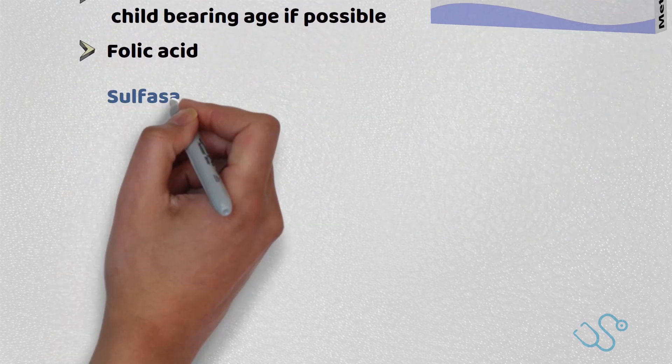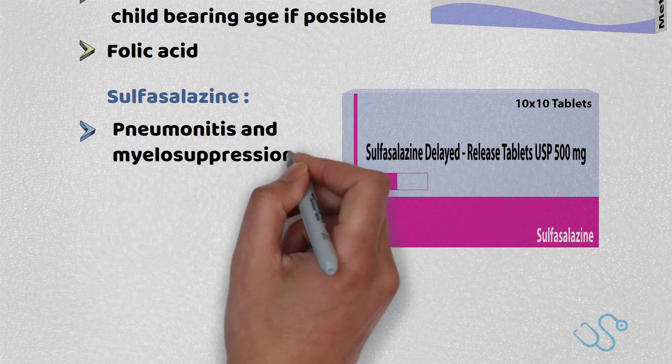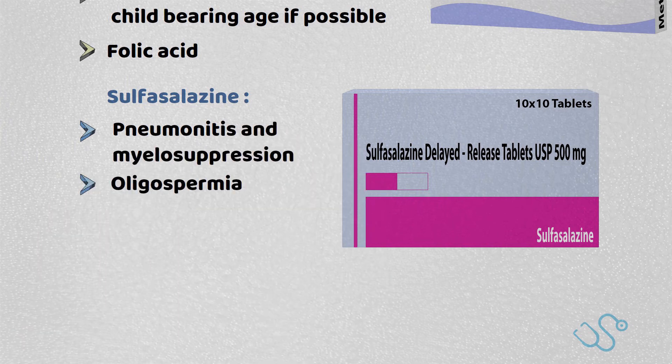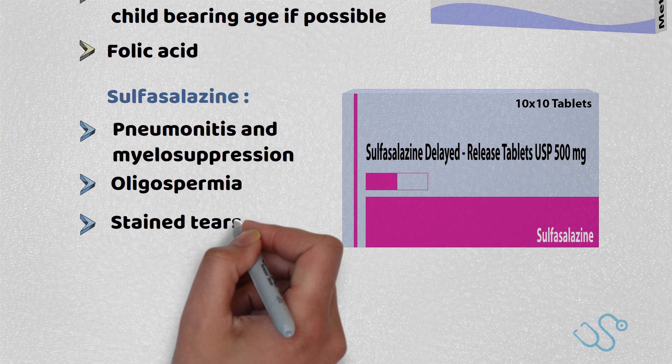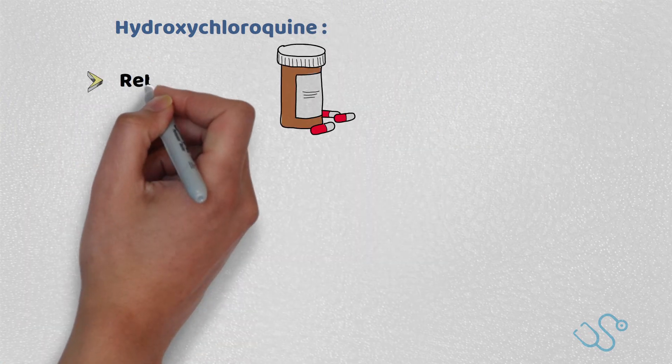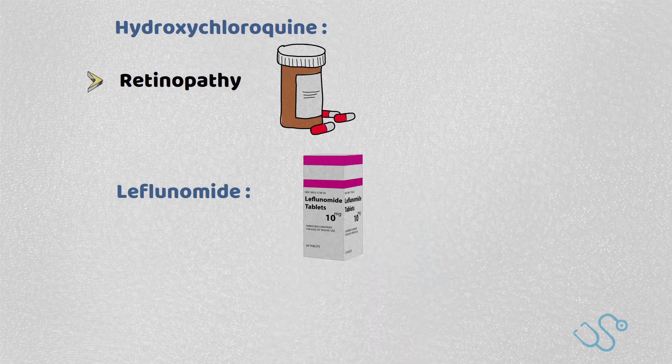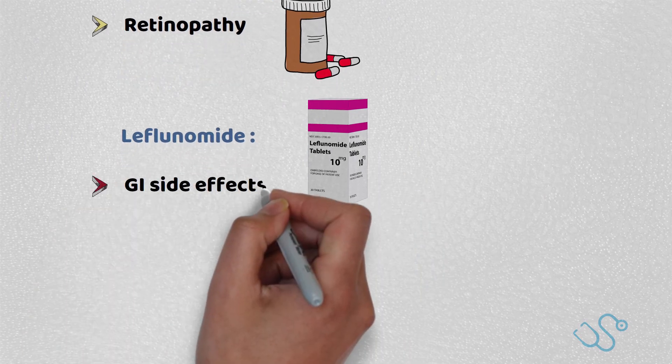Other DMARDs include sulfasalazine, which can cause pneumonitis, myelosuppression, and oligospermia and classically stains tears with relation to Stevens-Johnson syndrome. Hydroxychloroquine is a drug used in malaria treatment but can cause severe retinopathy. Leflunomide usually causes GI side effects, as well as myelosuppression and lung pneumonitis.